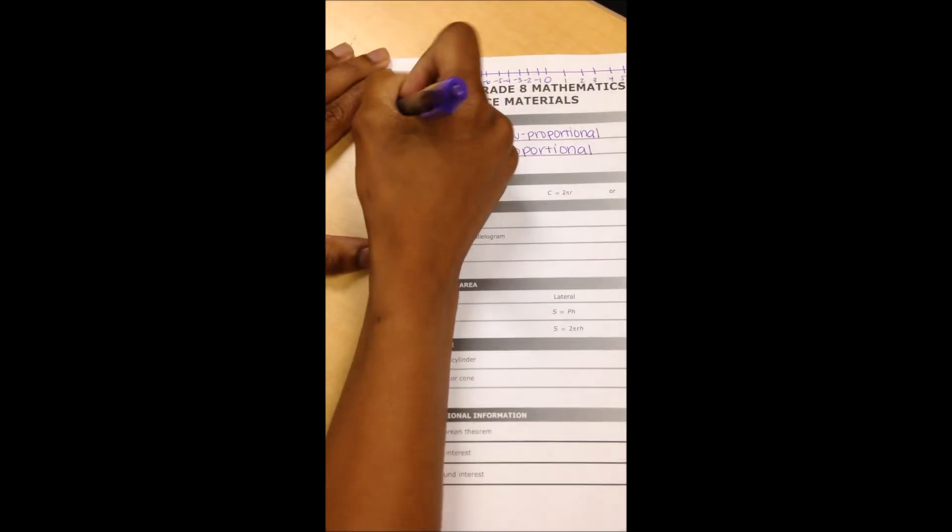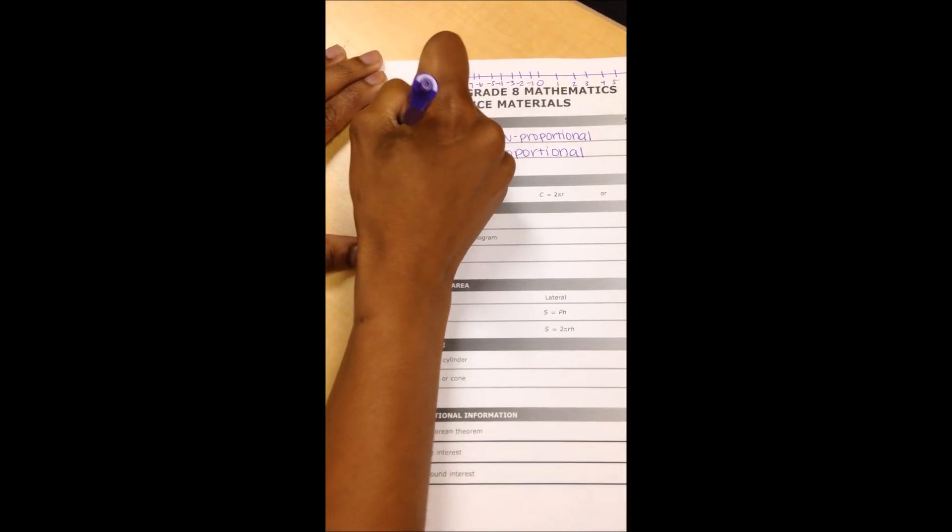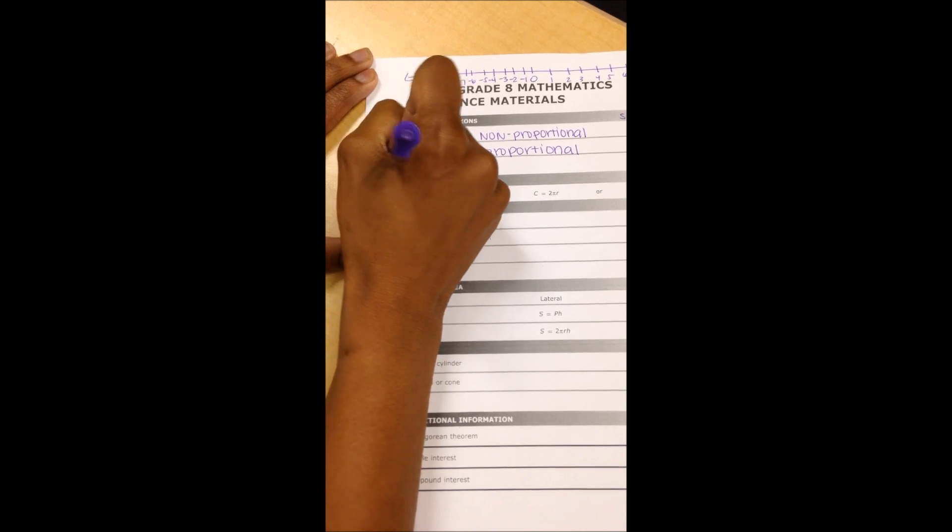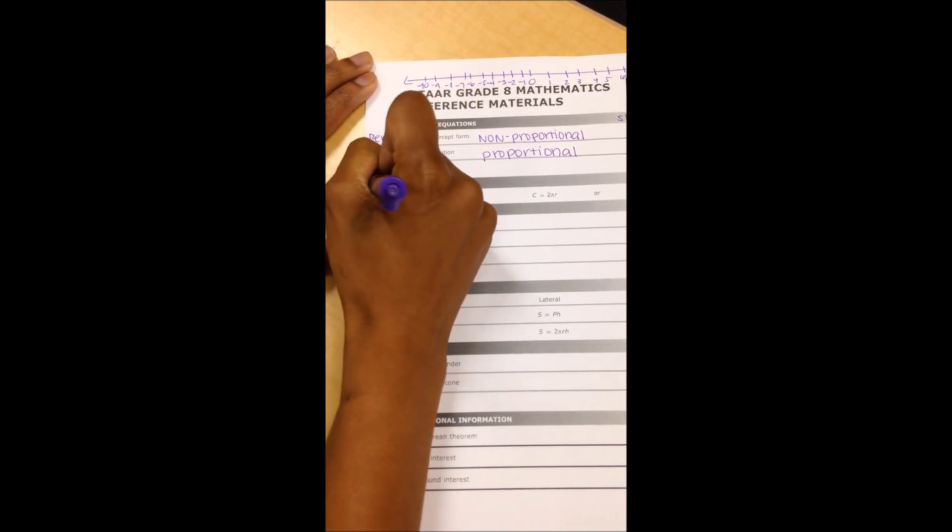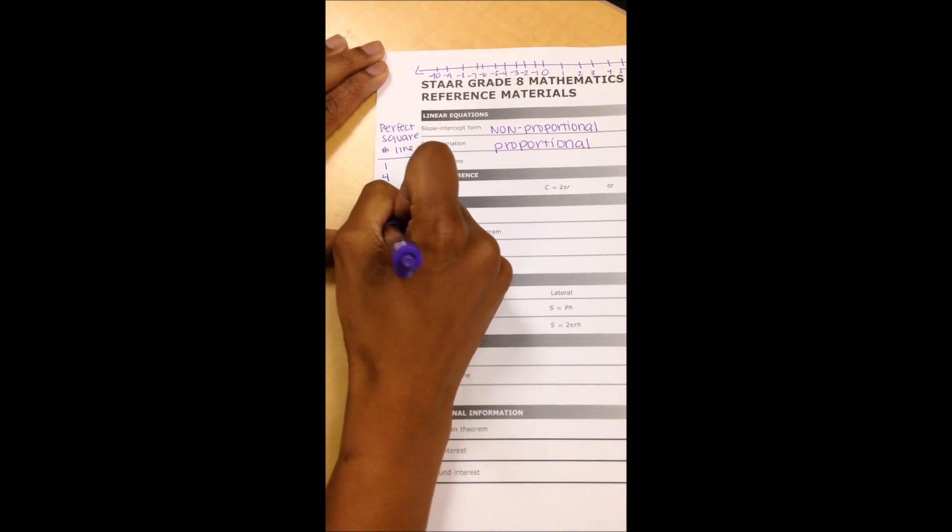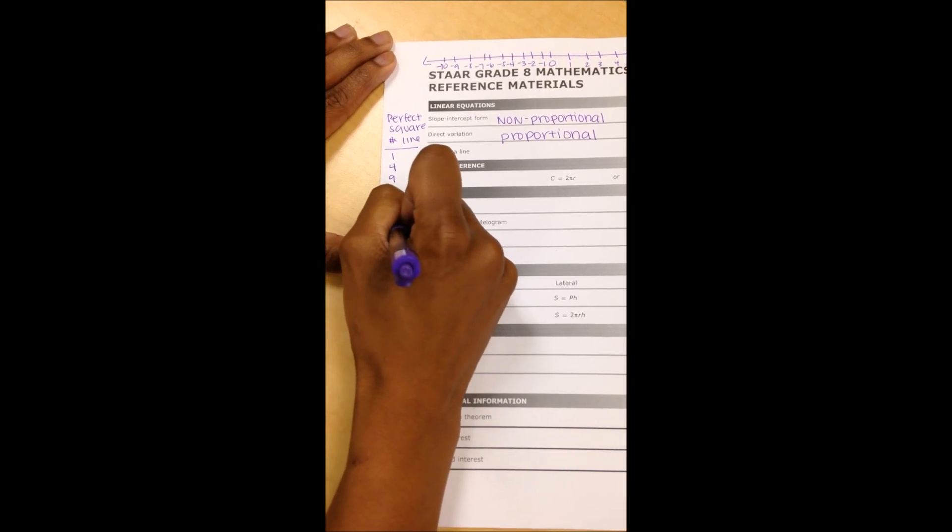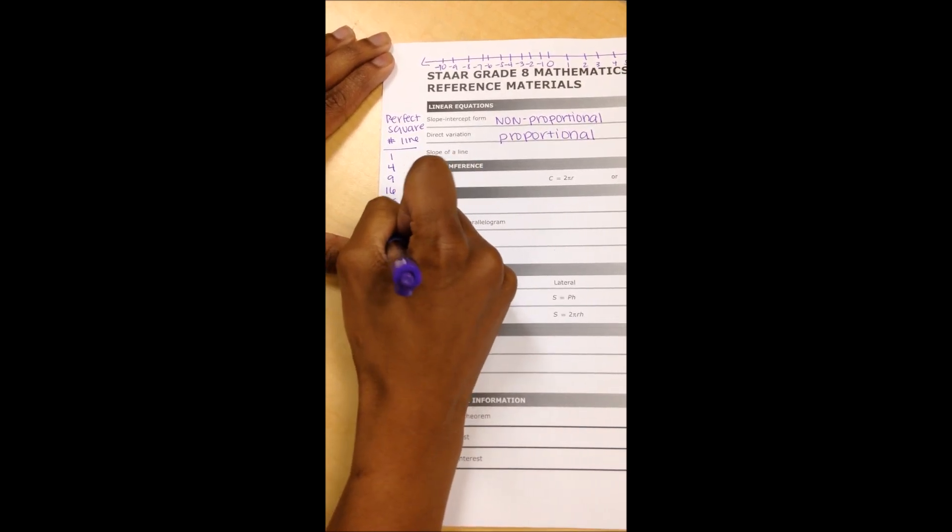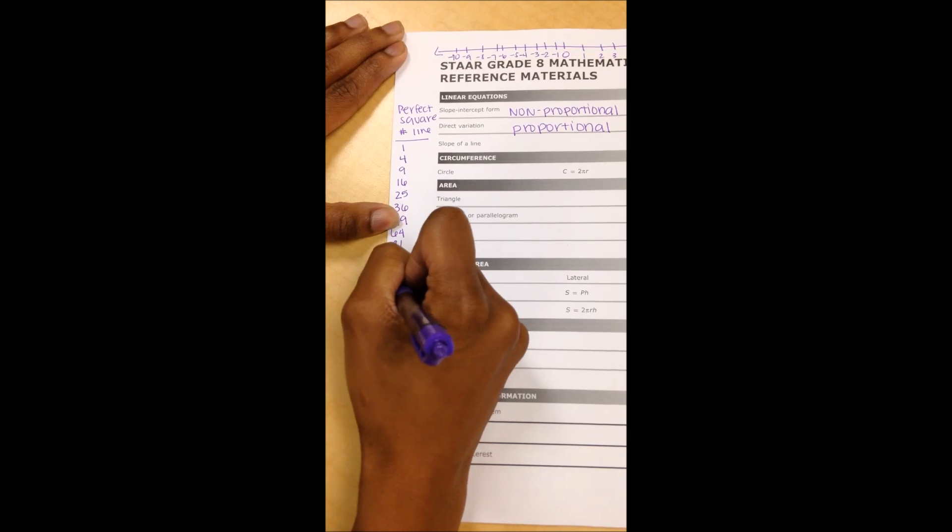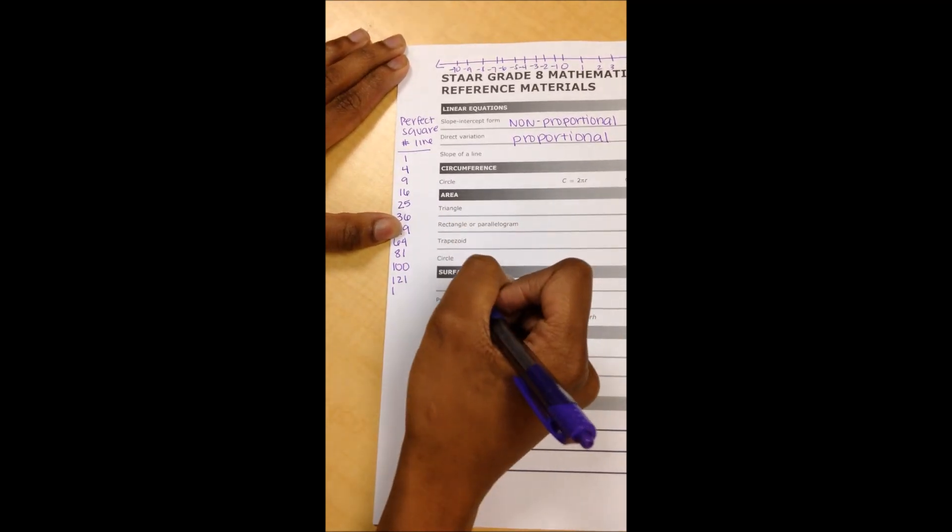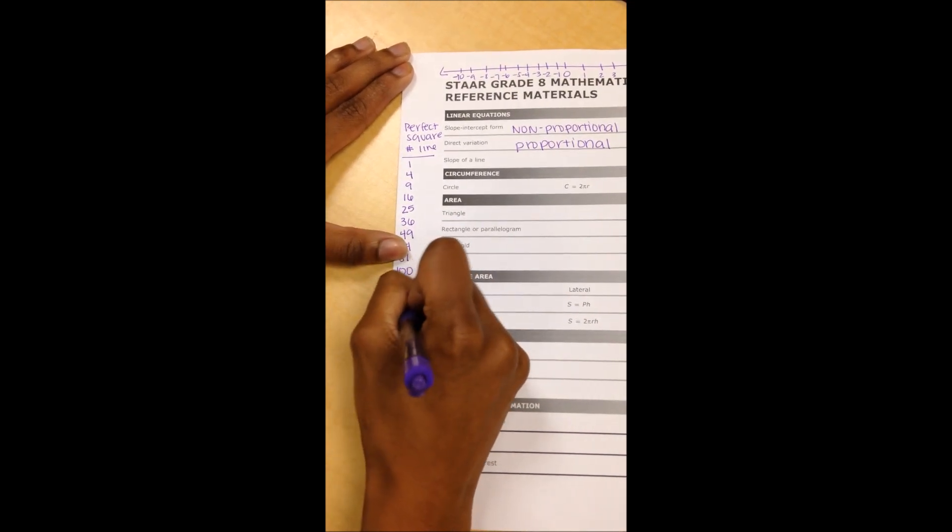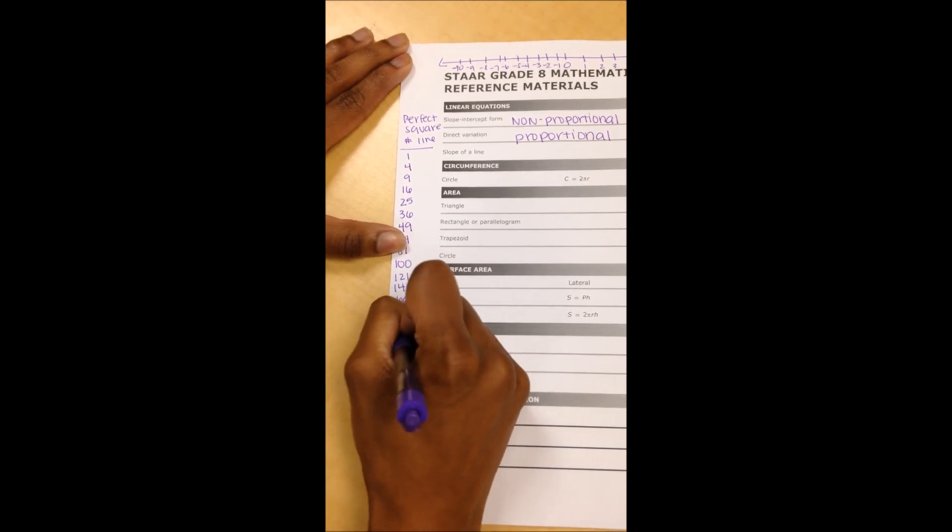Out here to the margin, draw your perfect square number line from 1 to 15: 1, 4, 9, 16, 25, 36, 49, 64, 81, 100, 121, 144, 169, 196, 225.